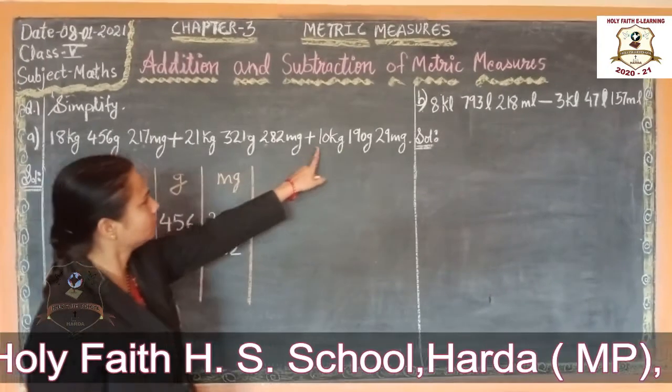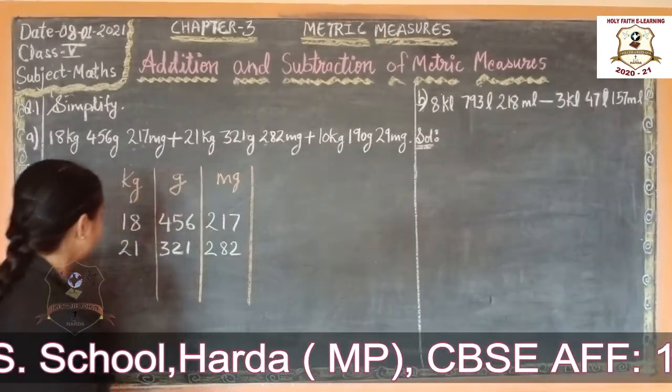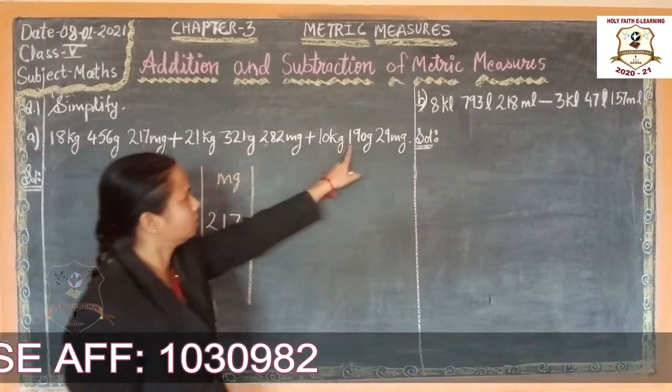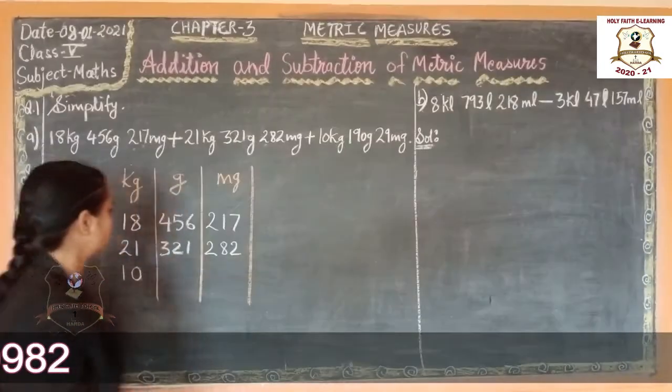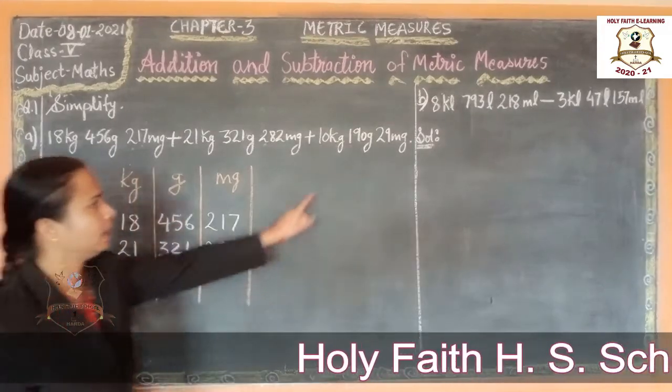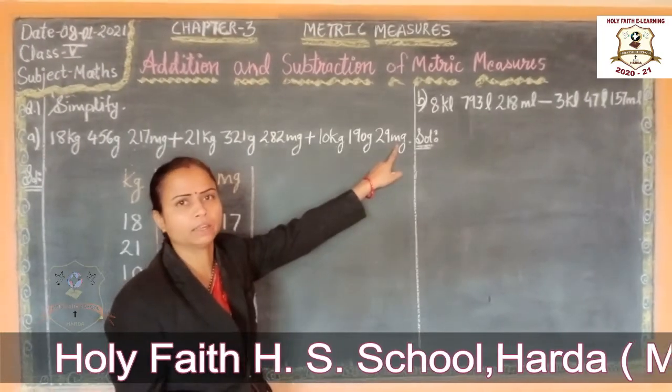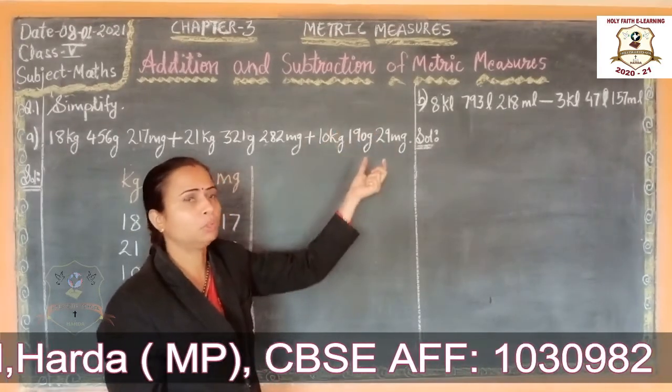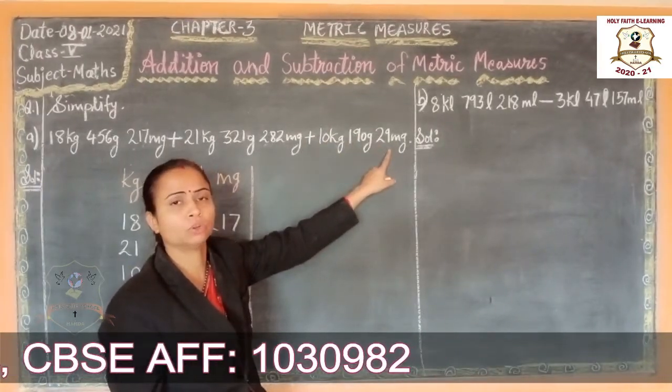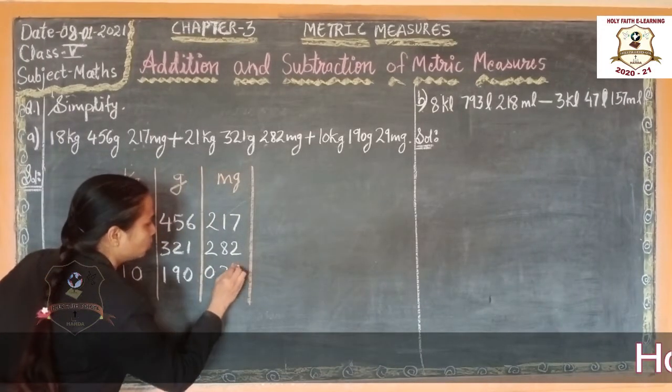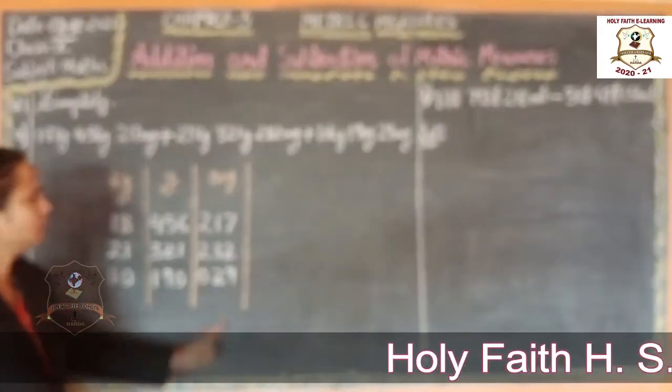Plus 10 kg. Write 10 in kg column, 119 gm. Write 119 gm column. And 29 mg. Students, we write, we put 0 before 29. So we write as here 0 2 9 in mg per. Now add.